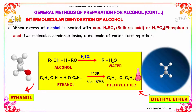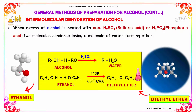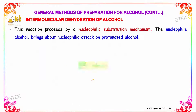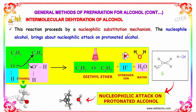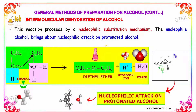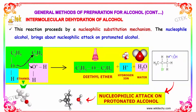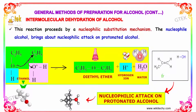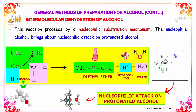Ethanol in the presence of concentrated H₂SO₄ at 413 Kelvin forms diethyl ether. This reaction proceeds by a nucleophilic attack mechanism. The nucleophilic alcohol brings about nucleophilic attack on protonated alcohol — the oxygen attacks on C₂H₅ to form an oxonium ion, resulting in the formation of diethyl ether plus H⁺ and water.